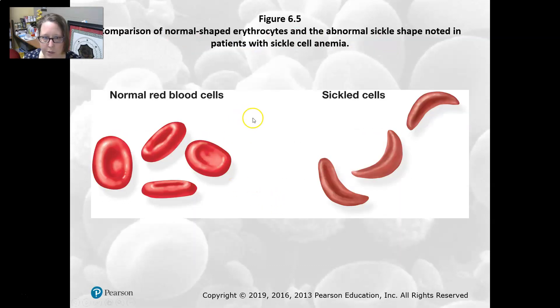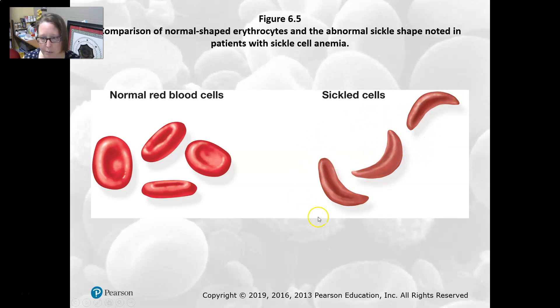Here is a normal red cell next to a sickle-shaped red cell — this is what the cells would look like in a sickle cell patient after they've had a sickle cell crisis.